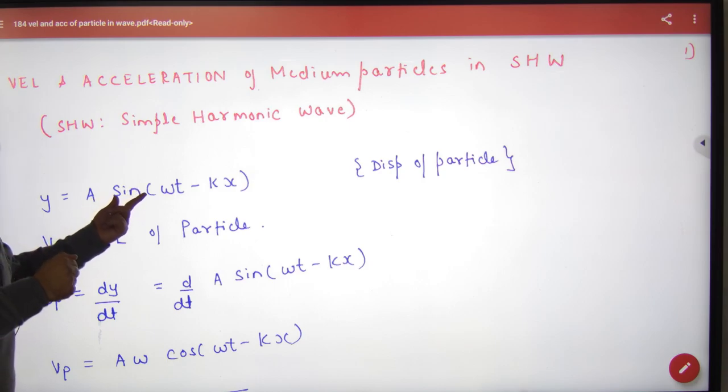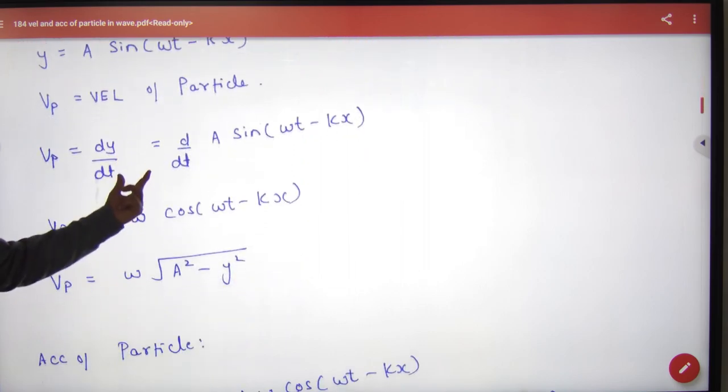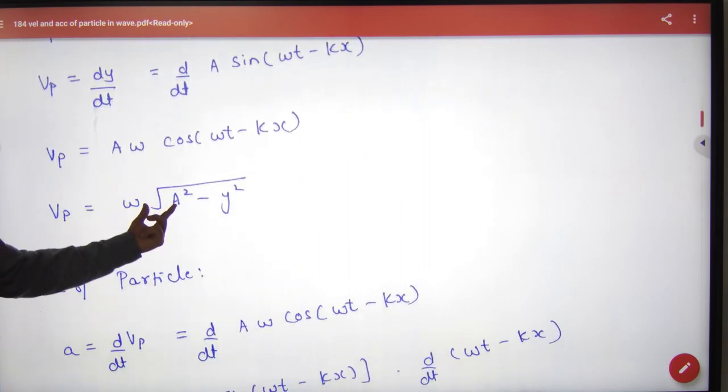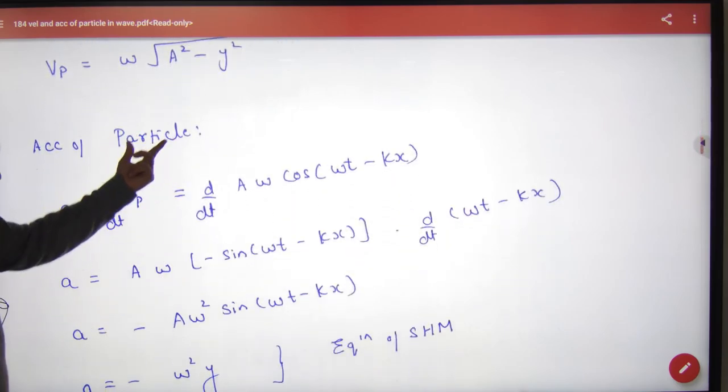So at that instant, what will be the velocity of the particle? Differentiate. This will be the velocity. What about acceleration? Differentiate. Acceleration will come.